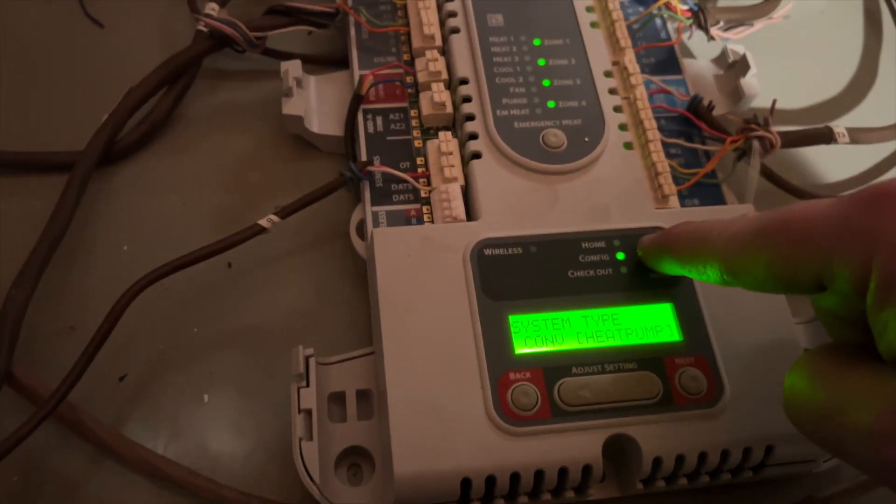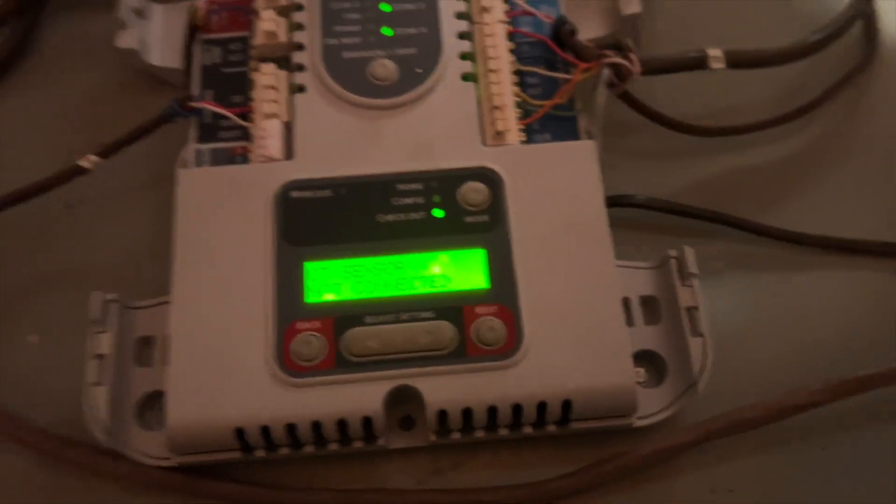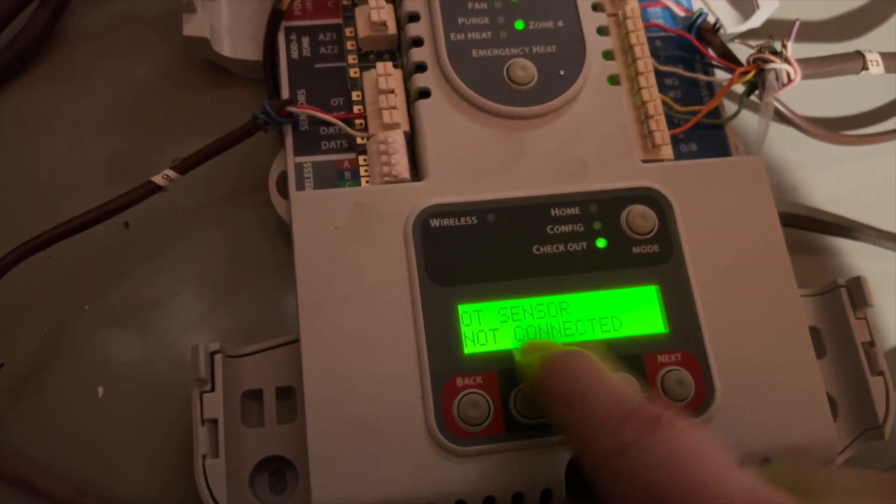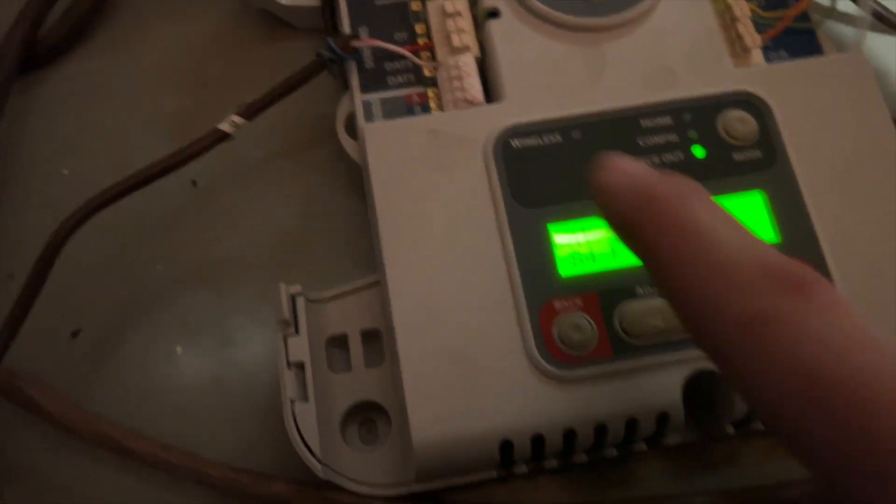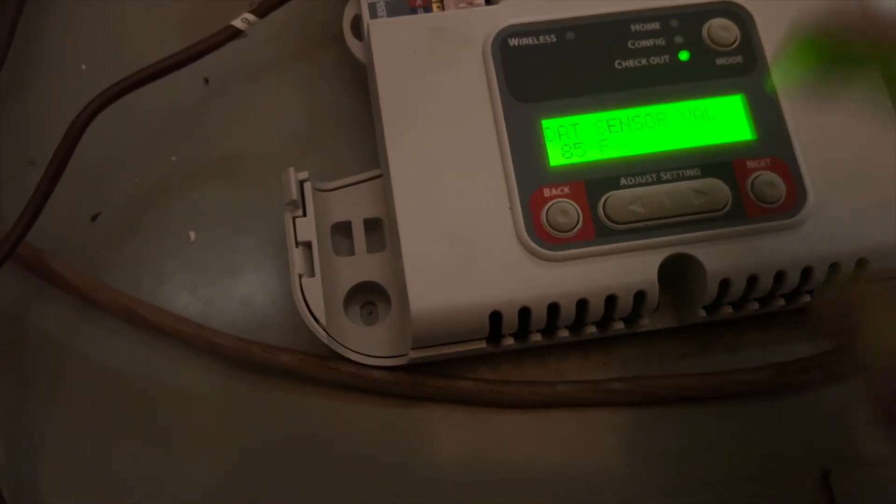So if we hit mode again, we hit it one more time, this takes us into checkout. Now checkout mode will allow us to turn things on. Now if this had an outdoor temperature sensor, it would show the temperature there, but we don't have one, so that's why it's saying it's not connected. If we hit next, this is our discharge air temperature sensor. It's reading about 85 degrees right now. That's because the heat was just running.